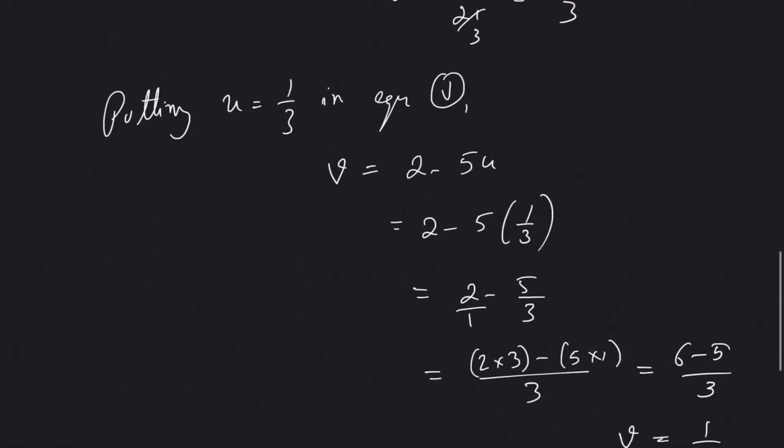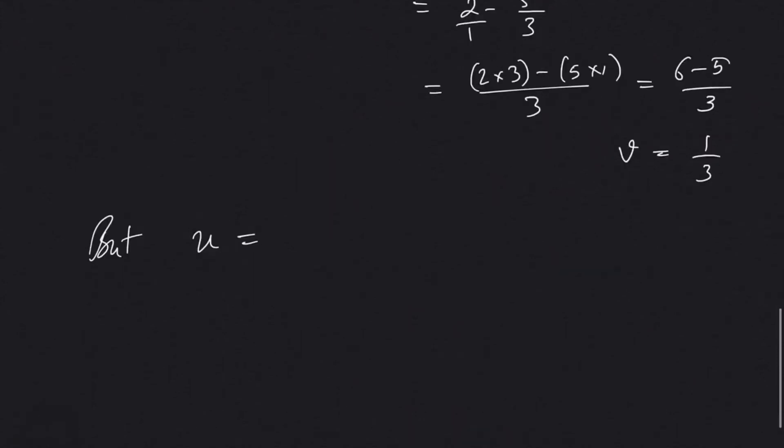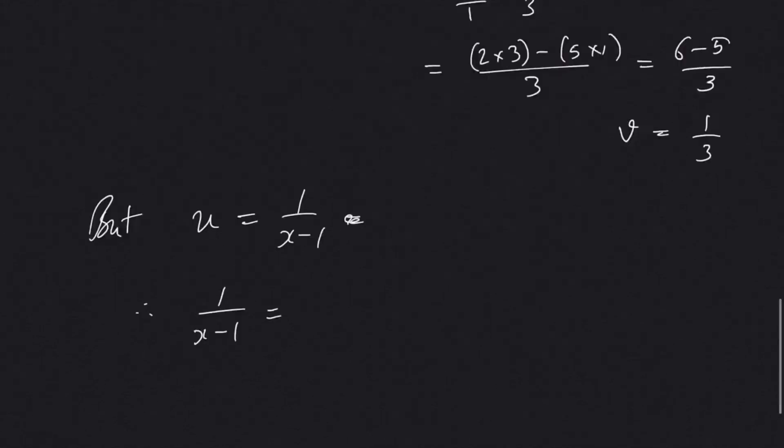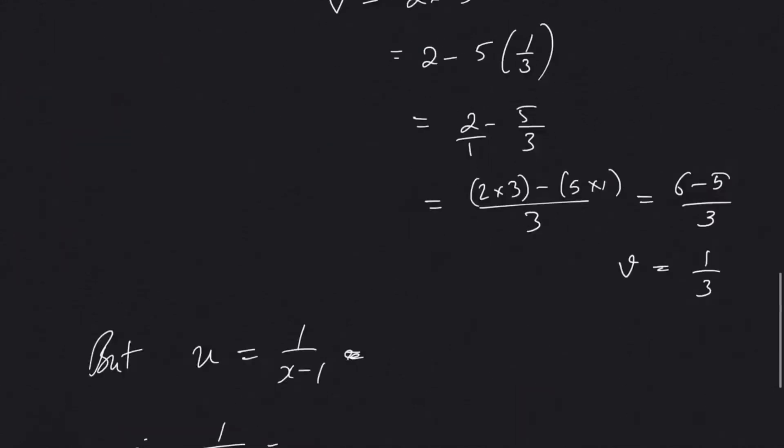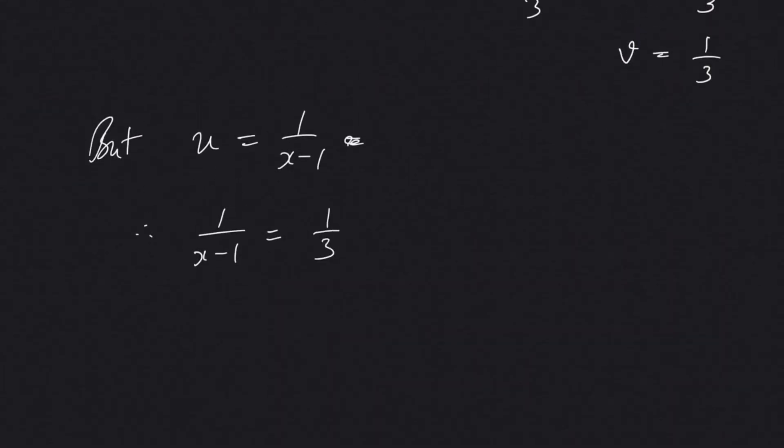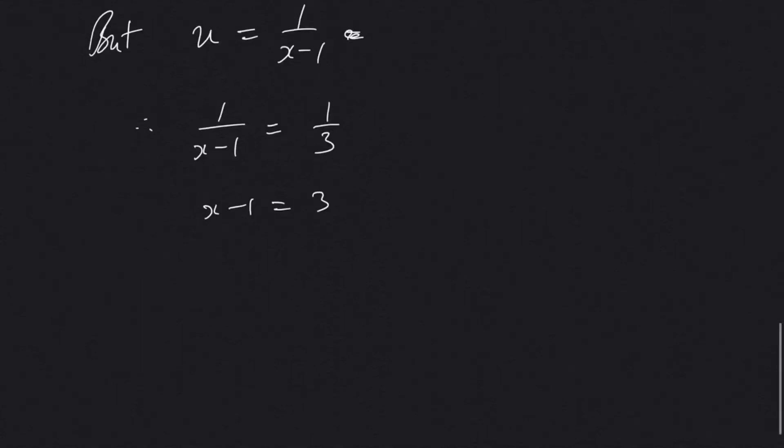But u is equal to what did we substitute? 1 by x minus 1. Therefore 1 by x minus 1 will be equal to the value of u, 1 by 3. So cross multiplying, x minus 1 equal to 3, so x equal to 3 plus 1, that will be 4.